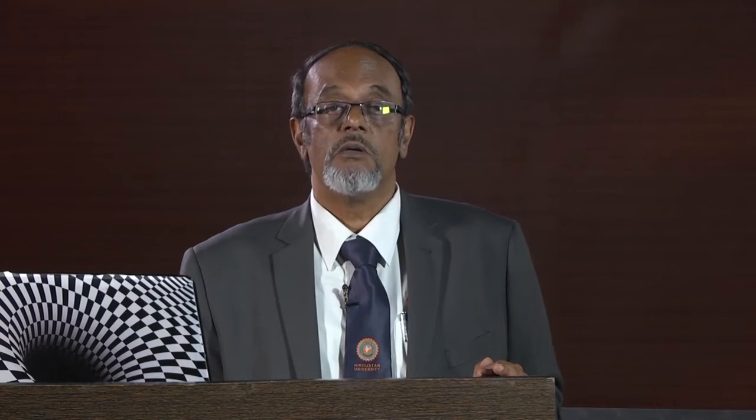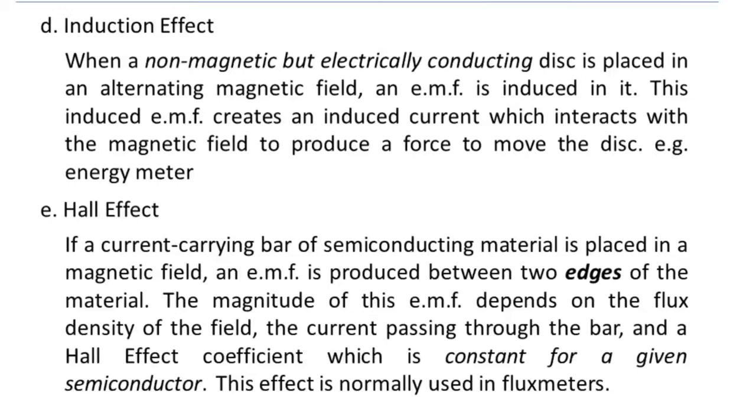More modern instruments could use something like the Hall effect. The Hall effect: if you have a current-carrying bar of some semiconductor material placed in a magnetic field, an EMF is generated between two edges of the material, and the magnitude of this EMF depends upon the flux density of the field. So if you place a Hall effect semiconductor in a magnetic field, the EMF generated is proportional to the magnetic field. Instruments like flux meters, which are used to measure the magnetic flux density, work on this principle.